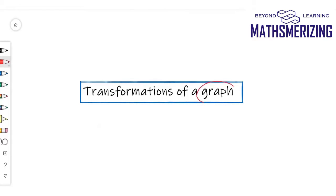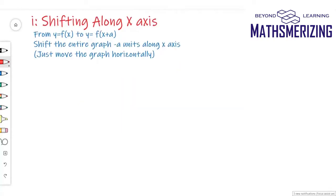We'll take a basic graph, apply the transformations, and from that we'll get stunning and more complex graphs. Our first transformation is shifting along the x-axis. Suppose I'm given the graph of y equals f(x) and now I want to draw the graph of f(x+a). I've simply changed x to x+a. All I need to do is shift the entire graph minus a units along the x-axis, moving the graph horizontally.